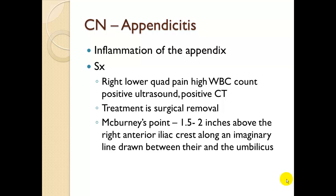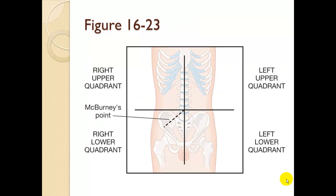Appendicitis, clinical note. Inflammation of the appendix. Symptoms include right lower quadrant pain, high white blood count as an immune system response, and a positive ultrasound or CT for inflammation in that area. Treatment is surgical removal. McBurney's Point is good to remember during assessment — it's one and a half to two inches above the right anterior iliac crest along an imaginary line drawn between there and the umbilicus. This is where we would palpate, and rebound tenderness at McBurney's Point might be documented.